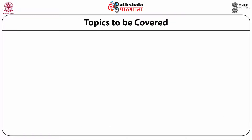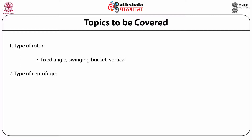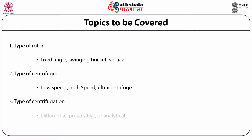Now we will discuss what is covered in this module. The first part covers the types of rotor — fixed angle rotor, swinging bucket rotor, and vertical rotor. The second part covers types of centrifuge based on speed, classified into three groups: low speed centrifuge, high speed centrifuge, and ultra centrifuge. The third section covers types of centrifugation based on principle: differential centrifugation, preparative centrifugation, and analytical centrifugation.